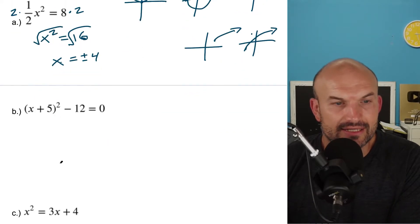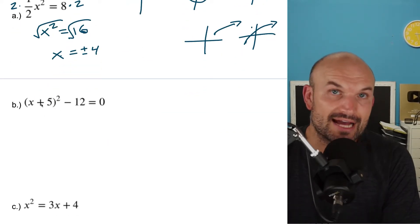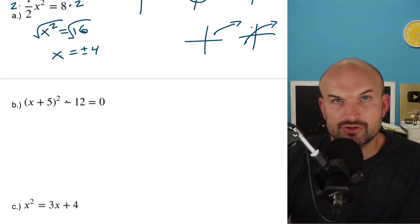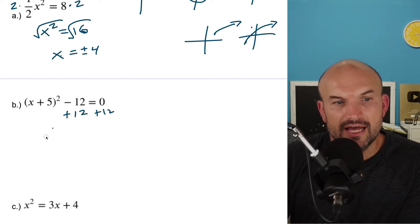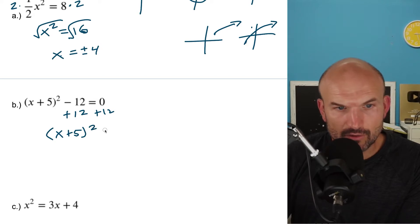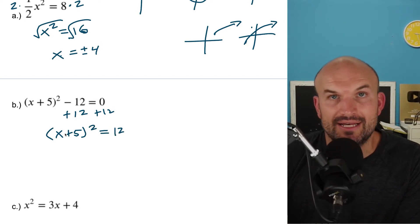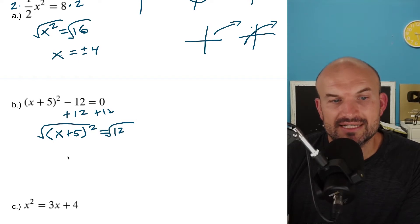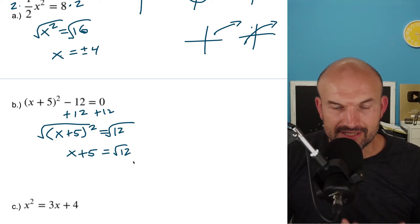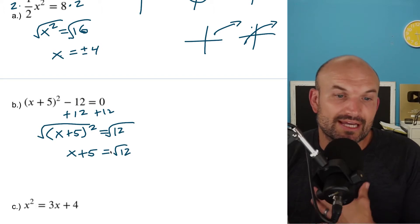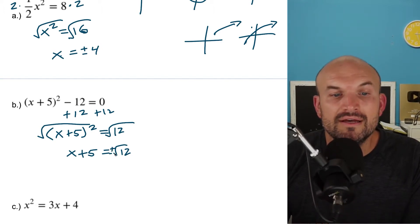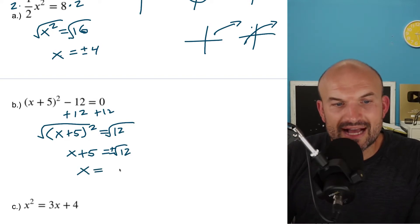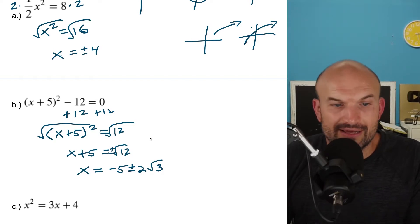Now let's take a look at this example. I only have one x, so before I take the square root, I need to isolate it. To isolate this, I'm going to add 12 to both sides. When I do that, I get x plus five, quantity squared, equals 12. Now I can take the square root on both sides. That leaves me with x plus five equals the square root of 12, which simplifies to two radical three. But remember we introduced the square root, so that's a plus or minus. So x is going to equal negative five plus or minus two square root of three.